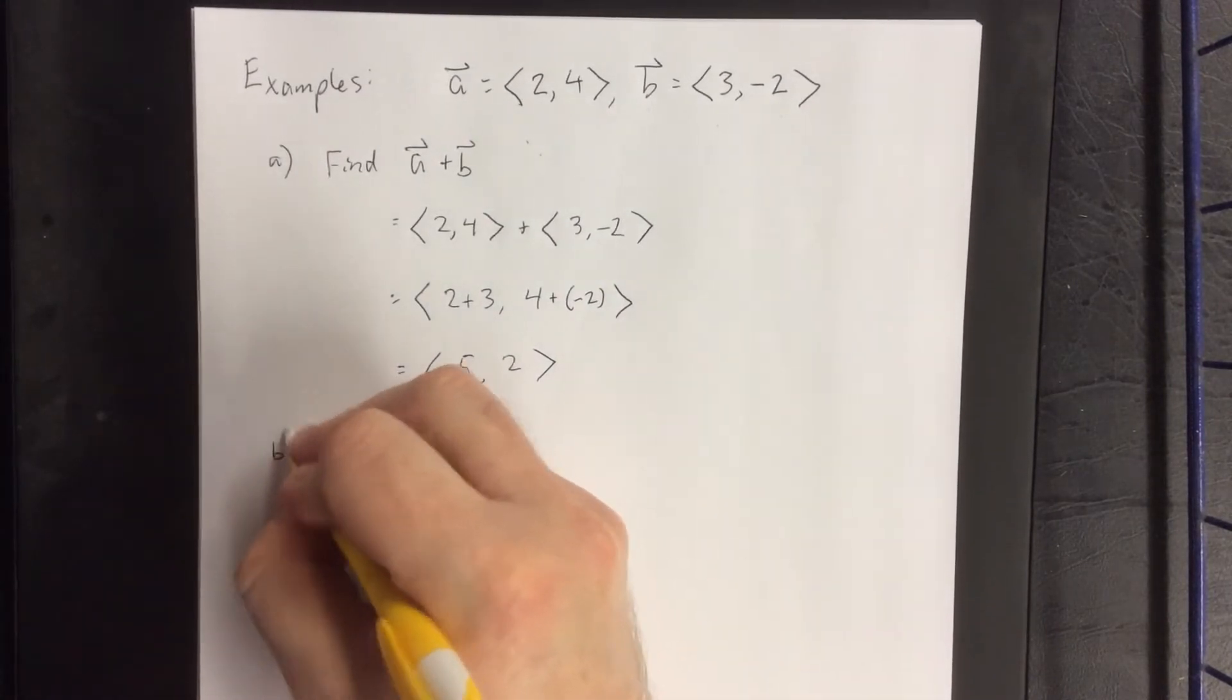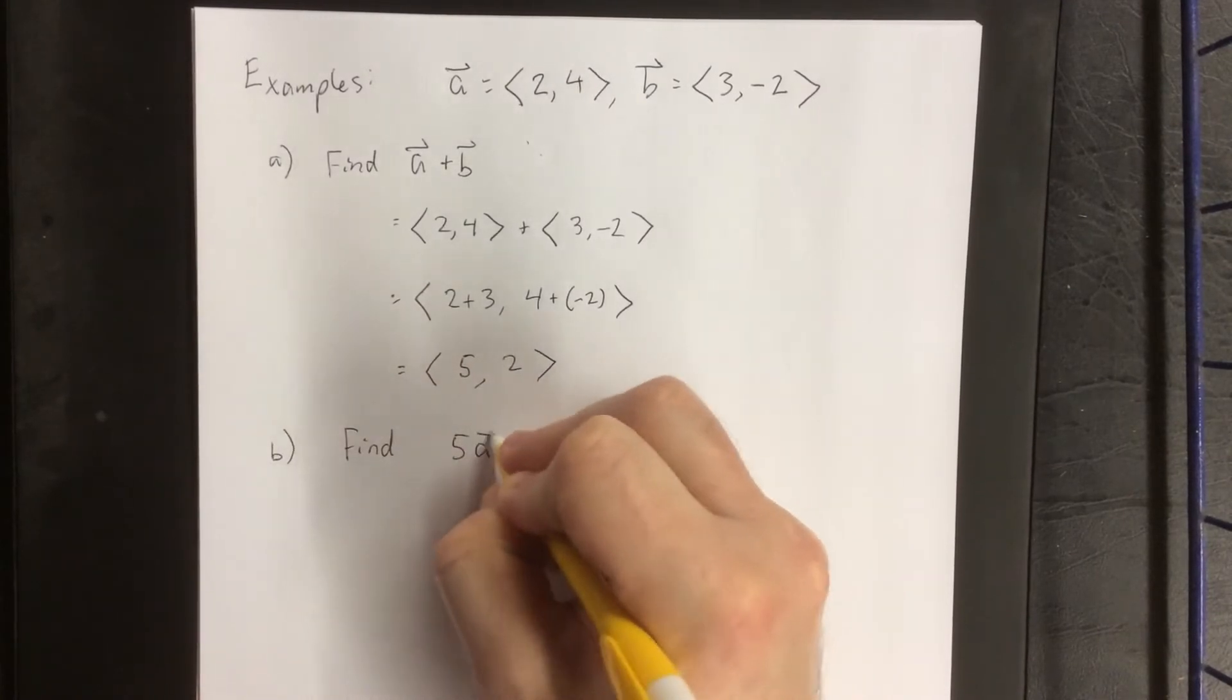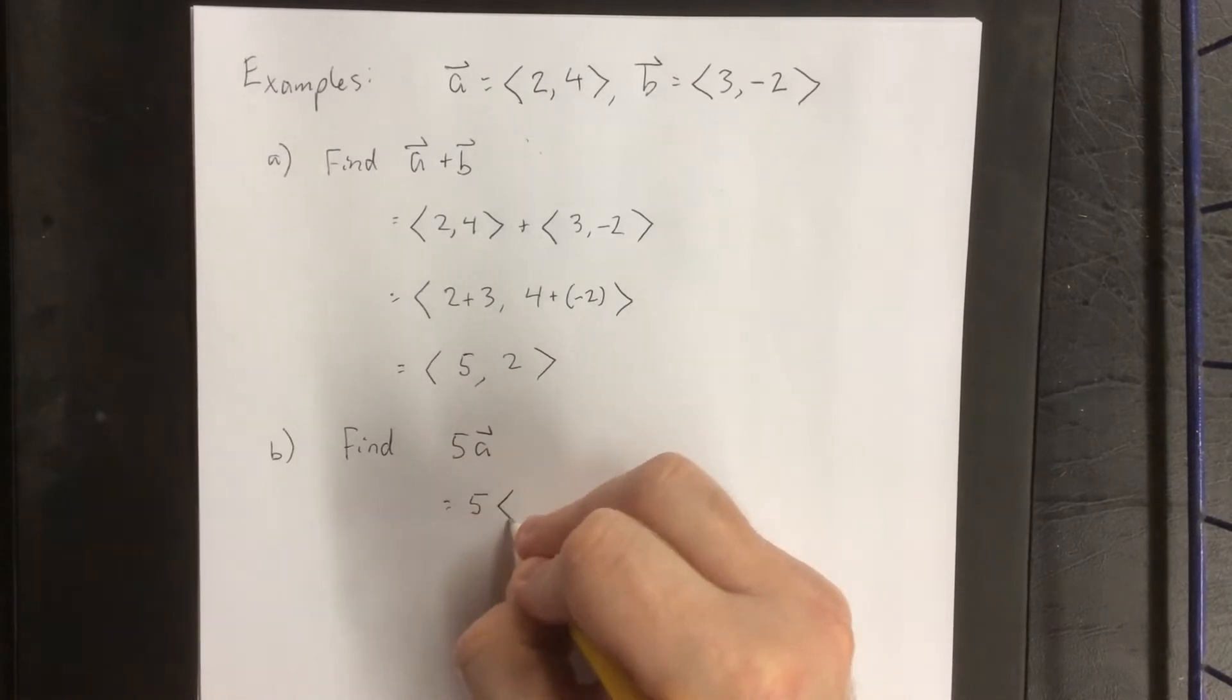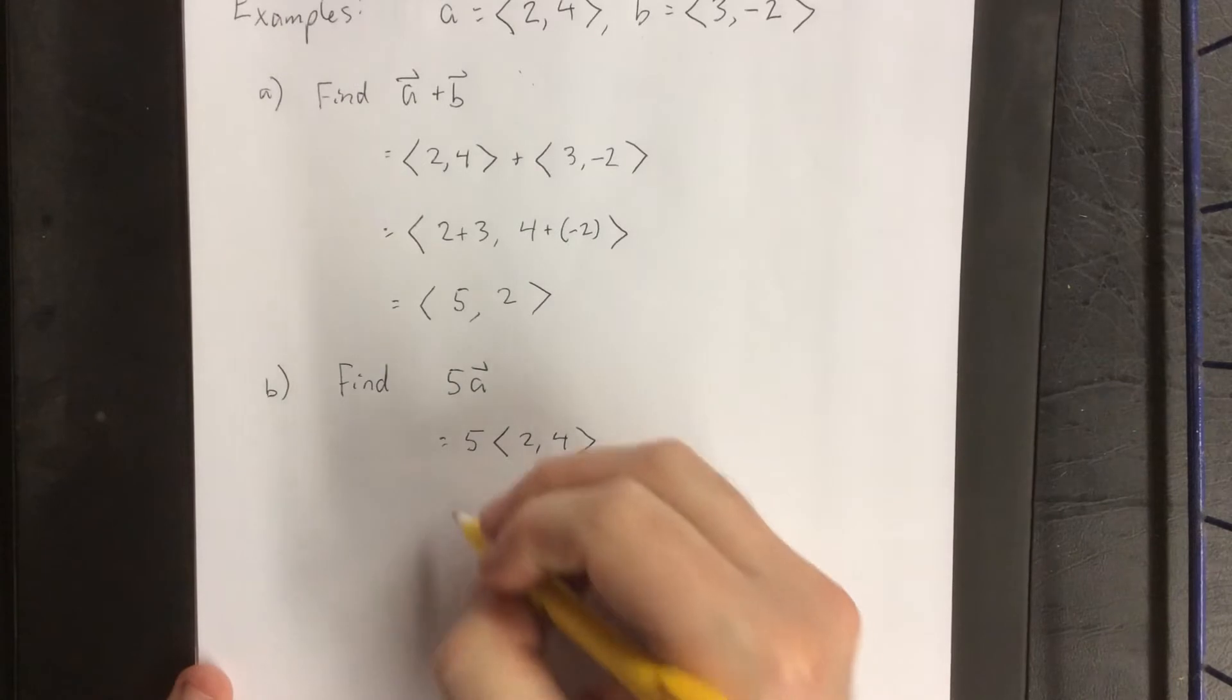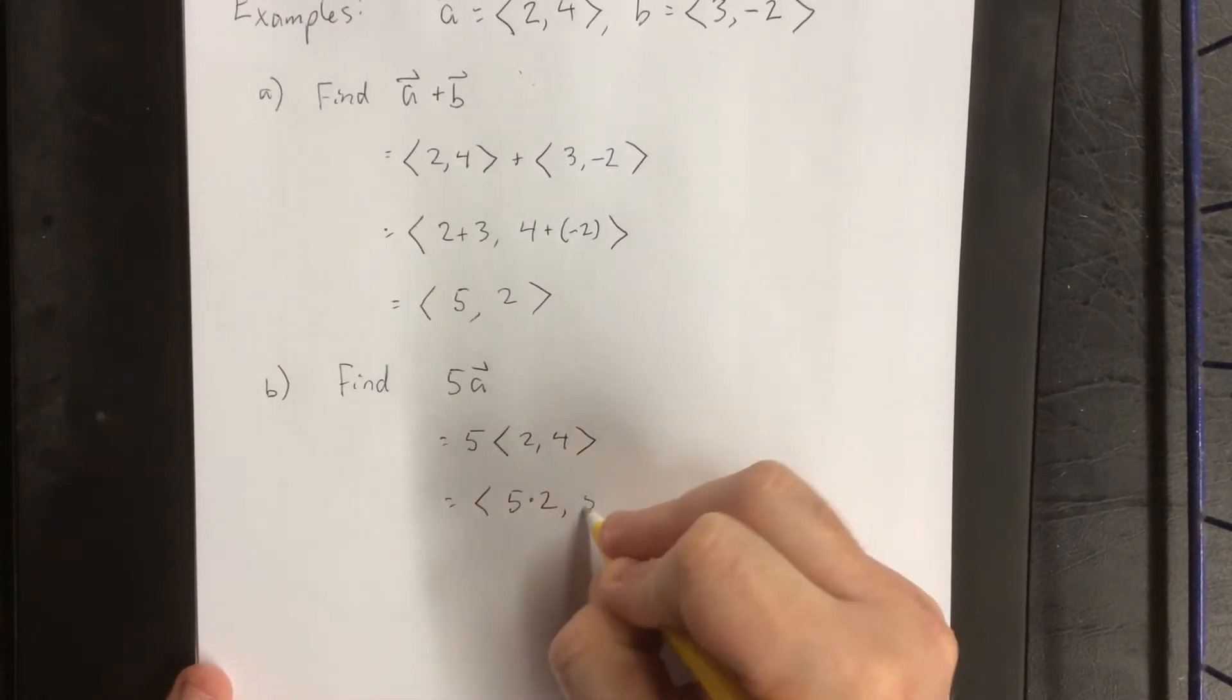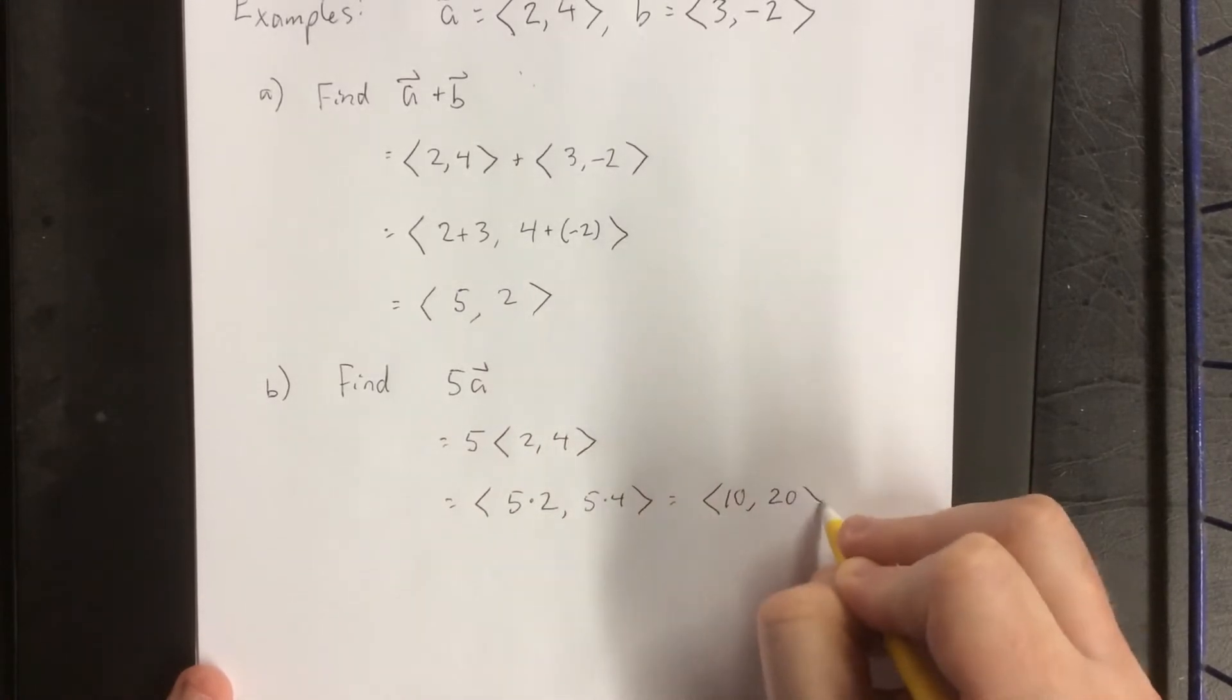For part B of the problem, I would like to find 5 times A, an example of scalar multiplication. So 5 times A is going to be 5 times the vector <2, 4>. That scalar multiple gets distributed to both components—5 times 2 and 5 times 4—for a final answer of the vector <10, 20>.